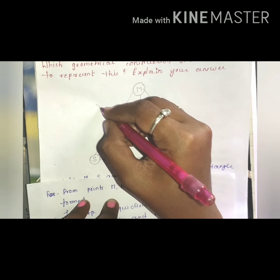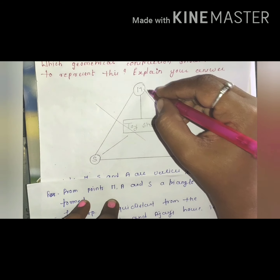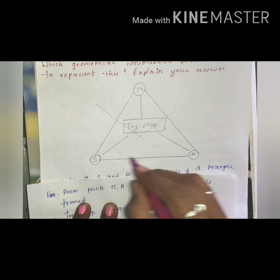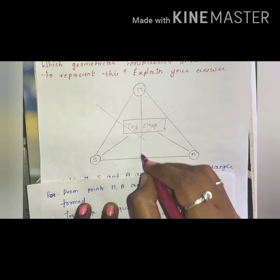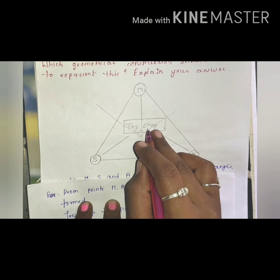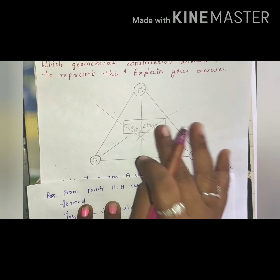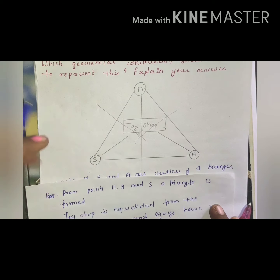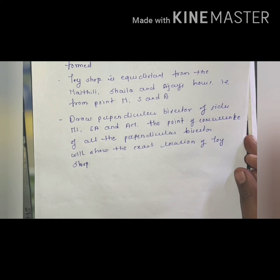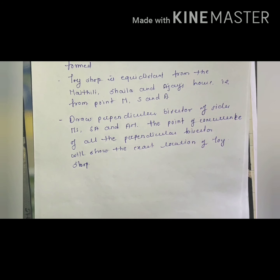The situation looks like this: there is one toy shop, Maithili's home, Shaila's home, and Ajay's home — each equidistant from the toy shop. So whatever this distance is, it will be equal for all three. If we join all three house locations, we get a triangle — a triangle is formed from points M, S, and A.